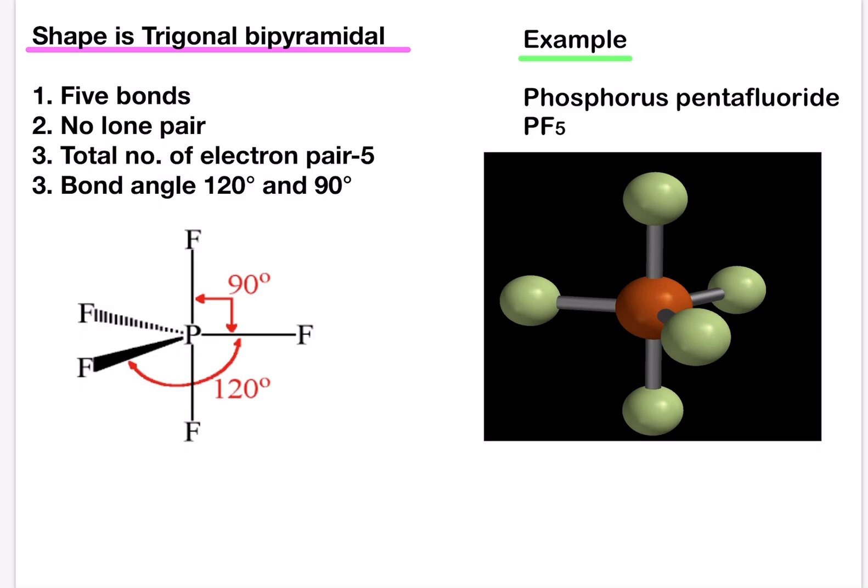Three of the fluorine atoms lie in the same plane as the phosphorus atom. The bond angle between fluorine, phosphorus, fluorine within this plane are 120 degrees. Two of the fluorine atoms lie above and below this plane at 90 degrees to it.